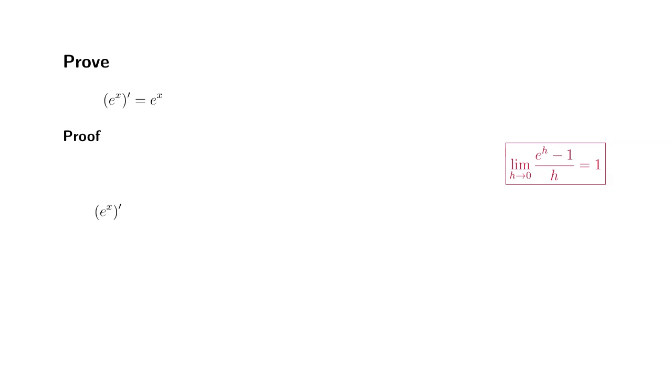Alright, so before we start the proof, I'm going to assume this following limit: limit of e to the h minus 1 all over h as h approaches 0 is equal to 1.